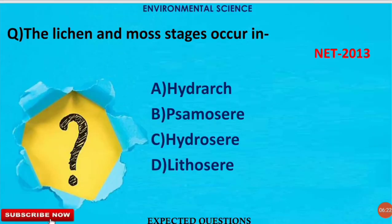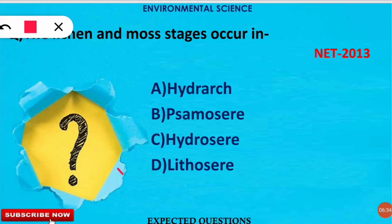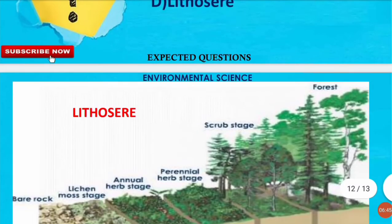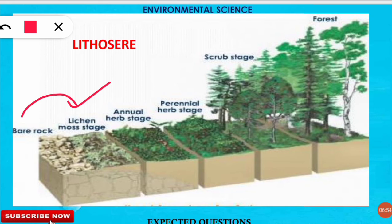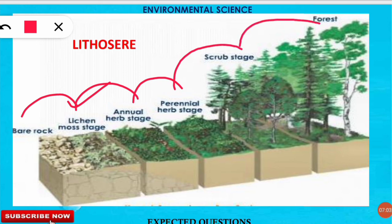The next question is: lichen and moss stage occur in which kind of succession? The correct option is option D — lithosere. Lithosere is the succession that occurs on bare rock. In lithosere, the pioneer species are lichen and moss, followed by the annual herb stage, then perennial herb stage, then scrub stage, and finally the forest stage. This is the full sequence for lithosere succession on a bare rock.